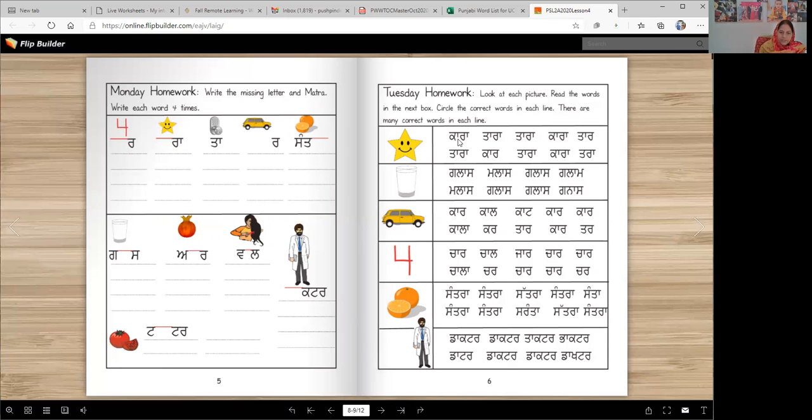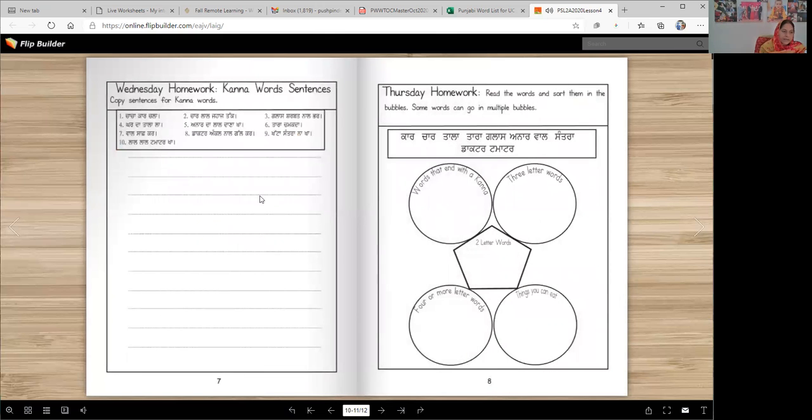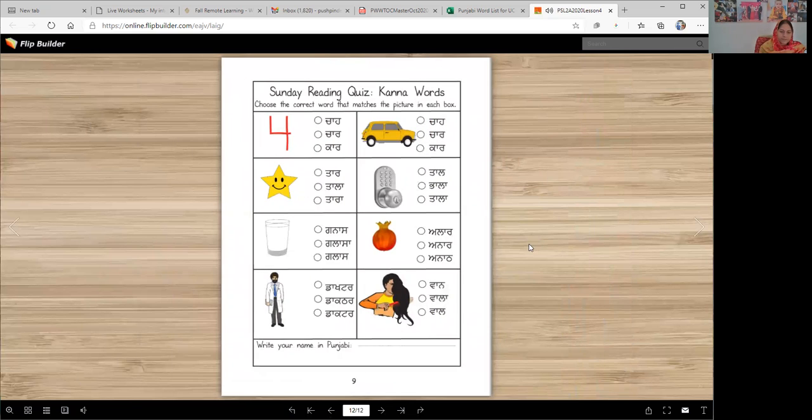Tuesday, again you look at the picture and see which words are correct, circle those correct words. What this activity is doing for you is giving you practice in reading Punjabi. Now here are the same 10 sentences we learned. You can copy them over here. You will read them, you will copy them, you will write them, and you will read them again, and you will learn to read Punjabi. On Thursday, you are going to sort these words in categories. Words that end with a kanna will go here. Three letter words will go here, two letter words will go here, four or more letter words will go here, things you can eat will go here. What is this activity doing for you? Giving you practice in reading and writing.